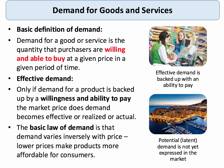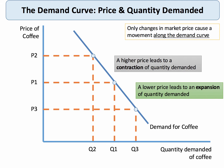The individual demand curve is the demand curve for a particular consumer for a particular product. We normally assume that demand varies inversely with price — a cheaper price makes the product more affordable for consumers. So the individual demand curve is nearly always drawn as downward sloping. If the price goes up, we see a contraction of quantity demanded; if the price goes down, we see an expansion of quantity demanded.